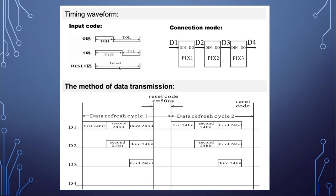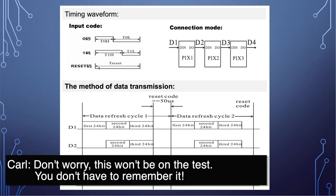Here's a quick look at the data waveform. The difference between a 0 and a 1 is simply the difference between a short then long pulse versus a long then short pulse. And if the data line is pulled low for more than 50 microseconds, that's considered a reset and everybody starts over. Don't worry — this won't be on the test. You don't have to remember it.